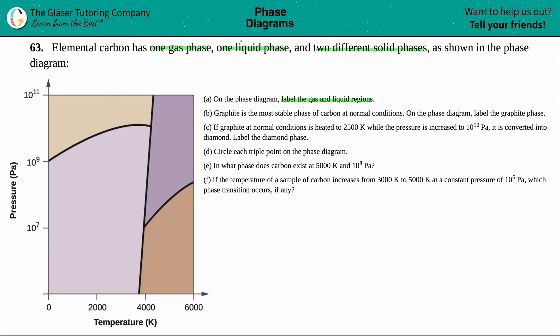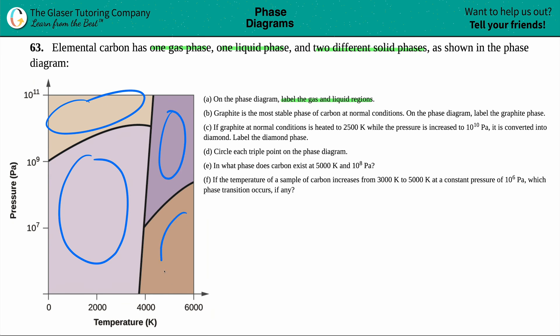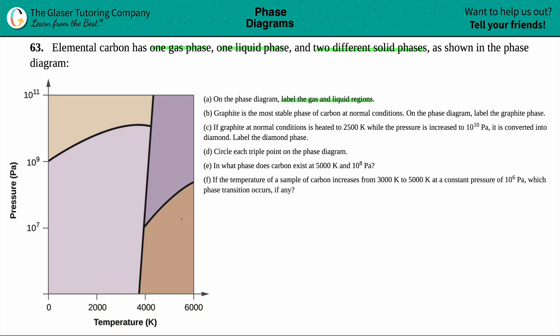On this phase diagram I see four different colors separated by black lines — one up here, down here, over here, and down here. We have to figure out which one of these four is the gas and which one is the liquid.